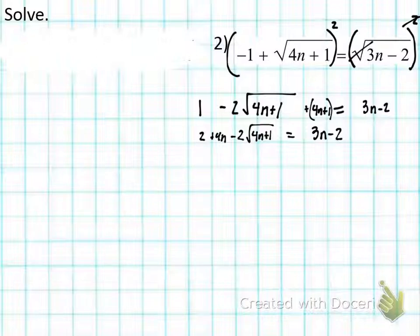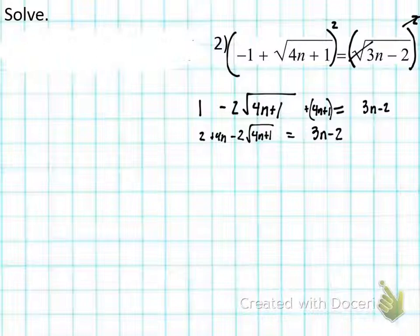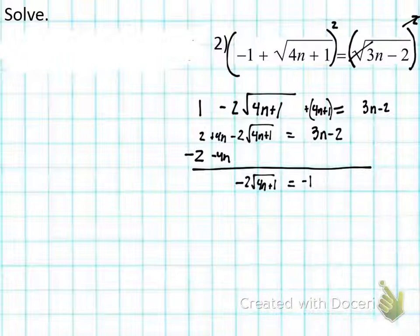Step four: isolate the second radical term. Is −2√(4n+1) isolated? No, so we subtract 2 and subtract 4n from both sides. What's 3n − 4n? −n. What's −2 − 2? −4. So we get: −2√(4n+1) = −n − 4.